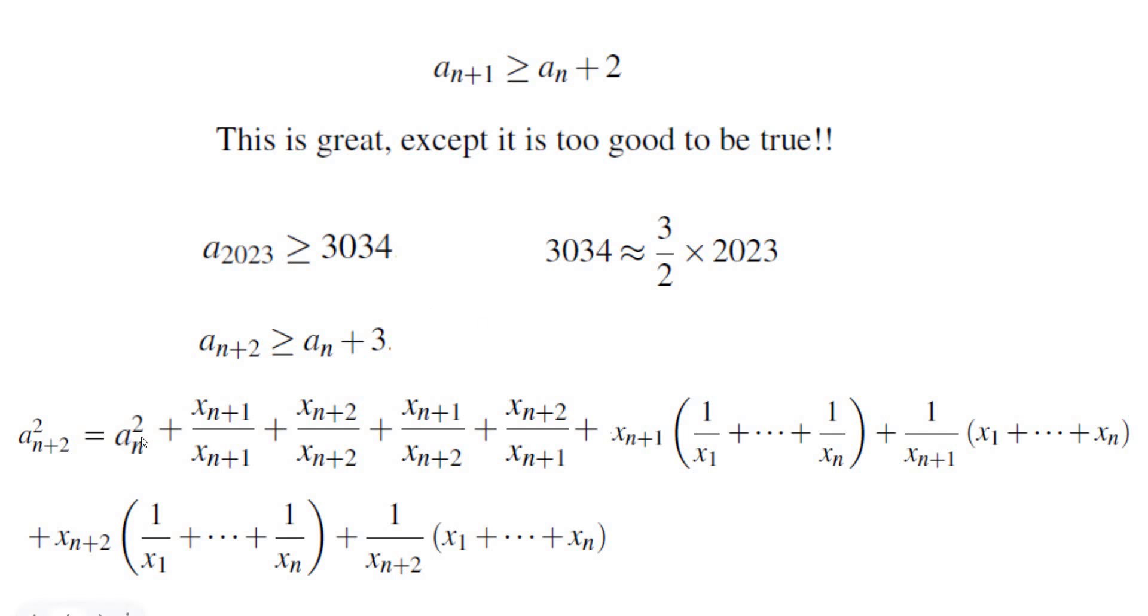We're going to keep the first term. The next four terms are greater than 4 by AM-GM. The first one is 1, the second one is 1, the next one and the next one are reciprocals. So if you use AM-GM and using the fact that xn plus 1 and xn plus 2 are not the same, this would be more than 4. And I'm going to apply AM-GM to the rest of them as well.